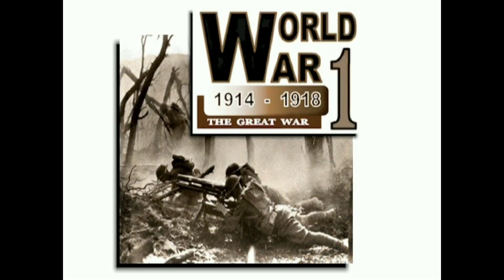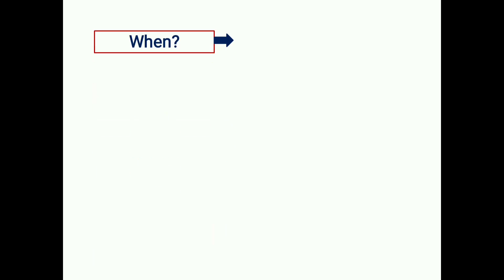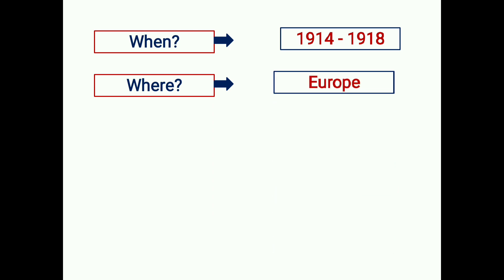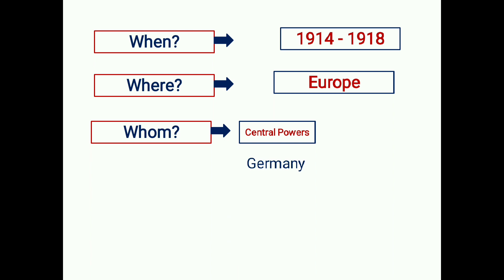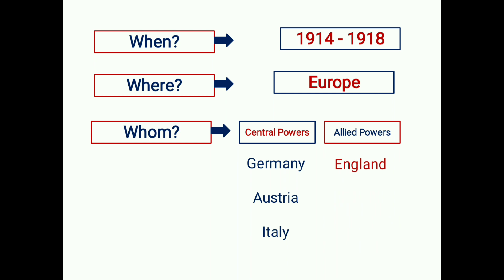World War I was fought from 1914 to 1918 in Europe. The two opposing sides were the Central Powers, consisting of Germany, Austria, and Italy, and the Allied Powers, consisting of England, France, and Russia.